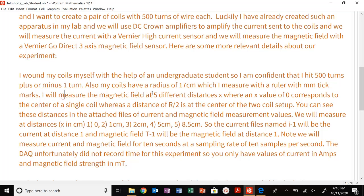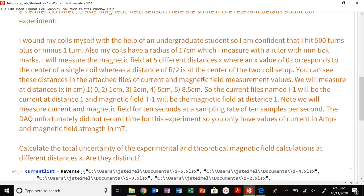I will measure the magnetic field at five different distances X, where an X value of zero corresponds to the center of a single coil. So R over two is the center of the two coil setup. So you can see these distances in the attached files of current magnetic field measurement values. We will measure distances at X in centimeters.